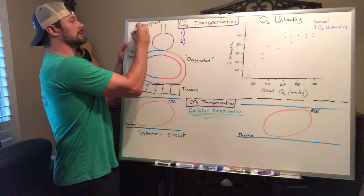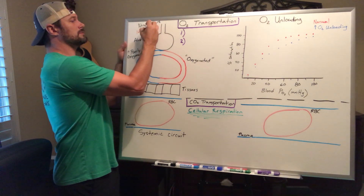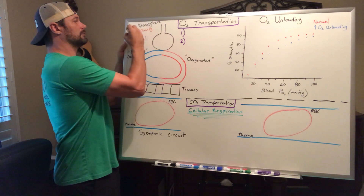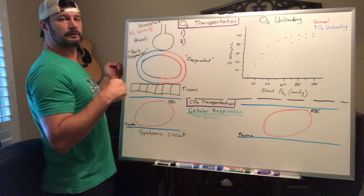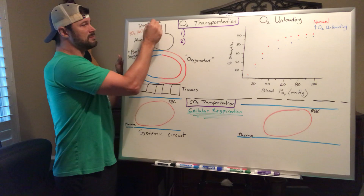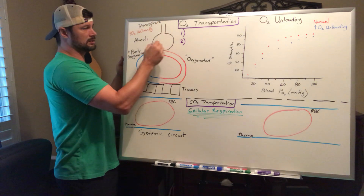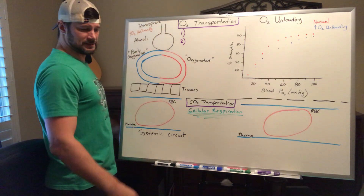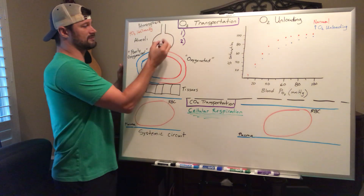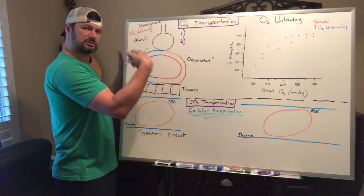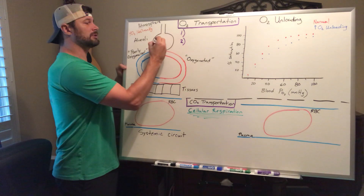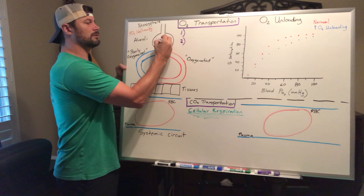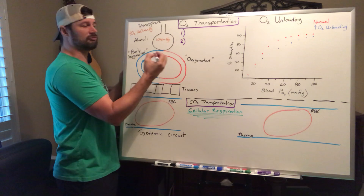In the atmosphere we have approximately 160 mmHg of partial pressure of O2, and once it mixes with carbon dioxide through the entire conduction system traveling down to the alveolus, it's going to be approximately 104 mmHg by the time it gets into our alveoli.